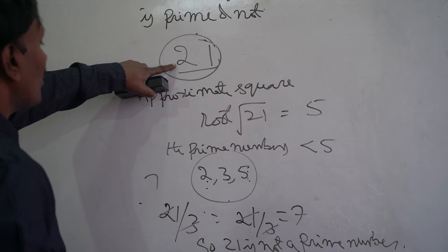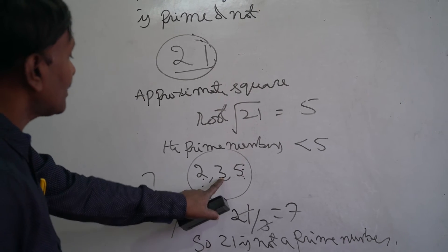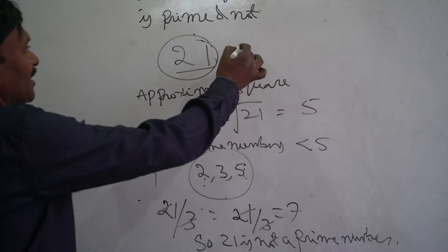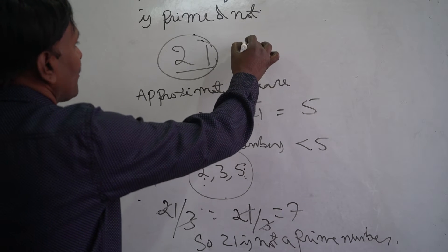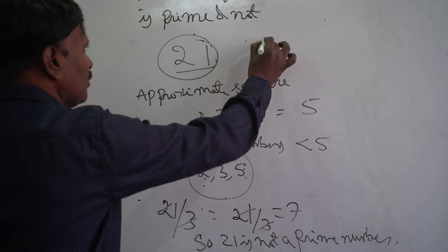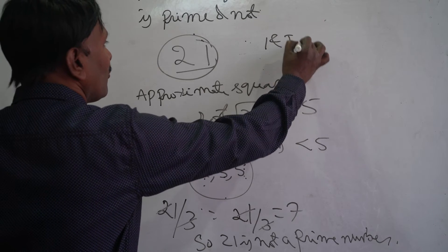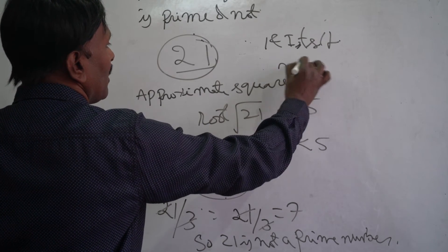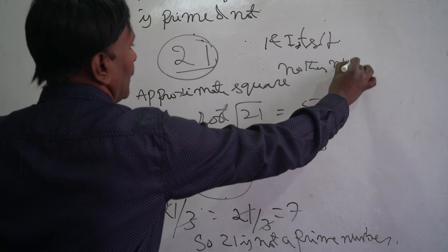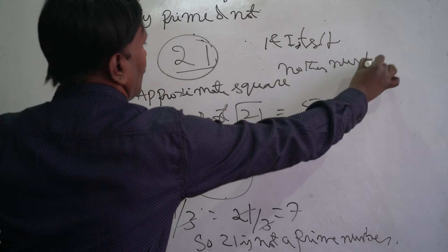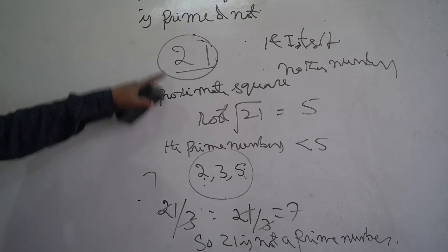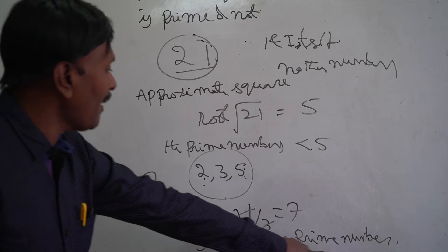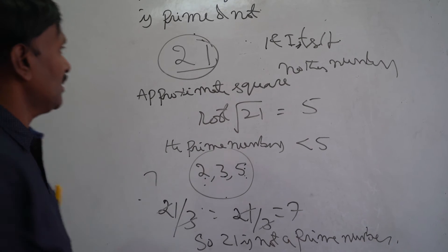Why is 21 not prime? 21 is divisible by 3. We know the definition: a number is called a prime number if it is divisible by one and itself only — no other number. But 21 is divisible by 3, so 21 is not a prime number.